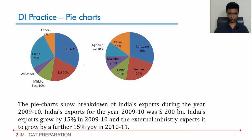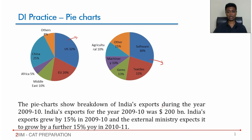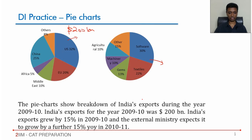We are continuing with another set of pie charts. This is exports of India, given in two different pies — one showing which countries the exports go to, and one by sectors. This is the breakdown of India's exports during 2009-10. The total amount was 200 billion. India's exports grew by 15% this year, and the external ministry expects further 15% growth the next year.